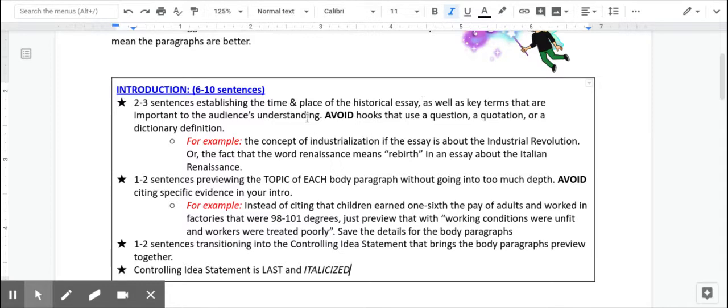First thing is, in a historical essay, we want you to start off with about two to three sentences establishing the time and place, as well as any key terms that would be important to the audience's understanding. You also want to avoid hooks that use something like a question, a quotation, or a dictionary definition.